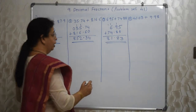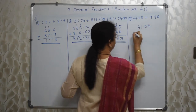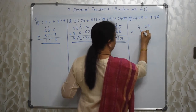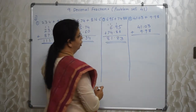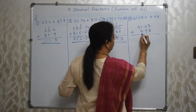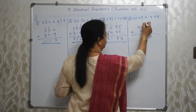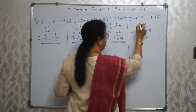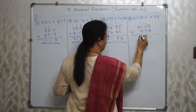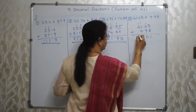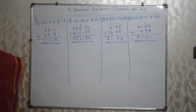Kaise systematic likhte ho, us pe depend karta hai aapka answer correct hoga ya wrong. Aur kuch decimal fraction mein zyada nahi hai — it is very simple. Chalo, 41.03 plus 9.98 meinne likh diya hai. Start karte hain addition. 3 plus 8, 11. 1 carry. 1 plus 9, 10. So 1 carry. Decimal ke niche decimal. 1 plus 1, 2. 2 plus 9, 11. 1 plus 4, 5. 51.01 is the answer.